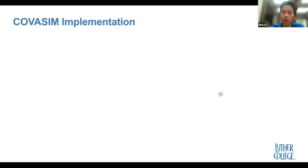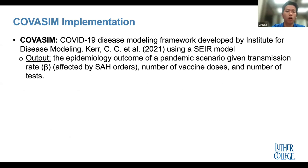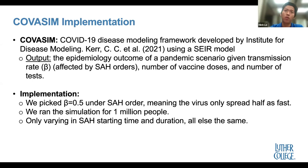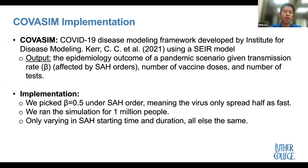For the pandemic simulation, we're using something called the CovaSim model, which is the disease modeling framework developed by the Institute for Disease Modeling. It takes in a scenario given a transmission rate beta — which is affected by the stay-at-home order — the number of vaccination doses, and the number of tests from our earlier data, and outputs the epidemiological outcome: number of infected people, number of deaths, etc. We set beta to 0.5 under the stay-at-home order, meaning the virus only spreads half as fast compared to when no stay-at-home order is implemented.